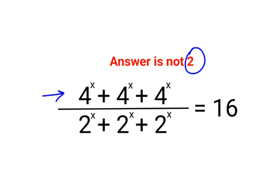We have 4^x plus 4^x plus 4^x divided by 2^x plus 2^x plus 2^x equals 16.